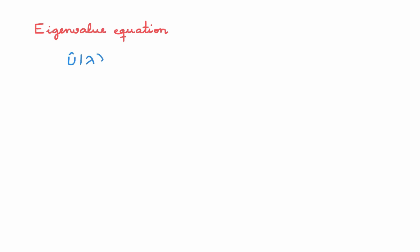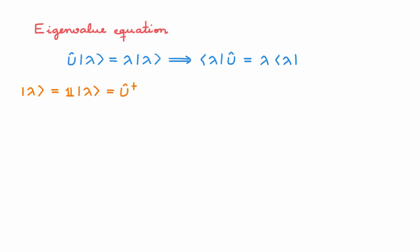Still working with the eigenvalue equation, the next thing I want to show is that the eigenstates of a unitary operator that correspond to different eigenvalues are orthogonal. To do so, we start again with the eigenvalue equation of a unitary operator U. The first thing we need to show is that this implies that ⟨λ|U = ⟨λ| times the eigenvalue. To see this, we start with the eigenstate |λ⟩ and then insert the identity. We can write out the identity as U†U because U is unitary. This here is the eigenvalue equation for U, so we get λ U†|λ⟩.